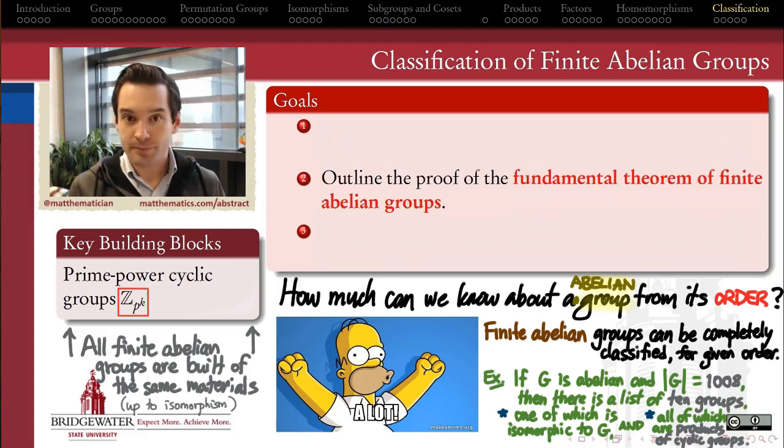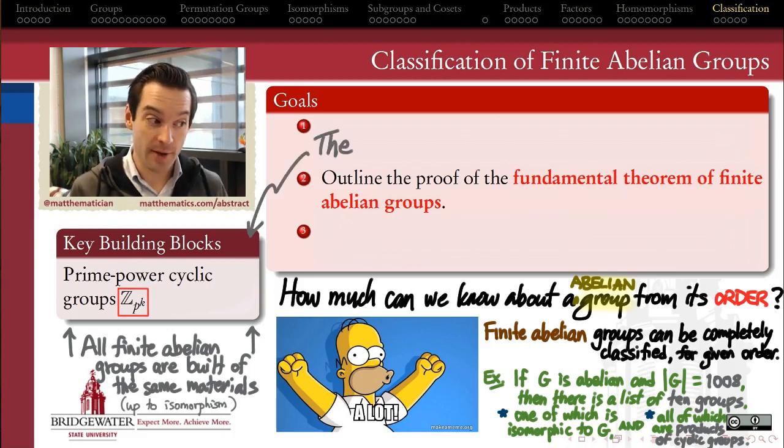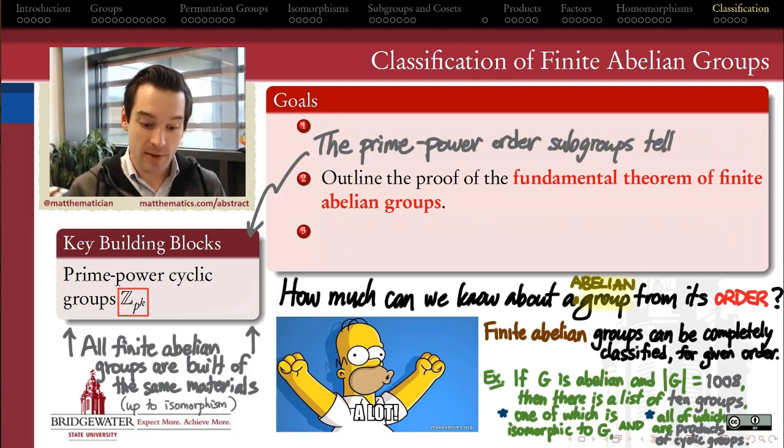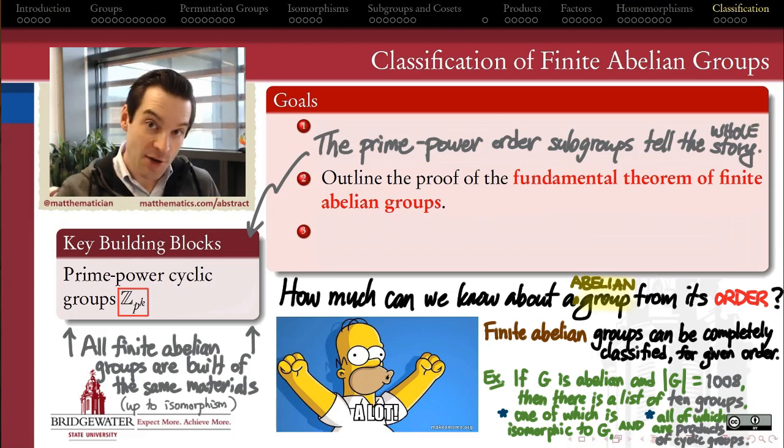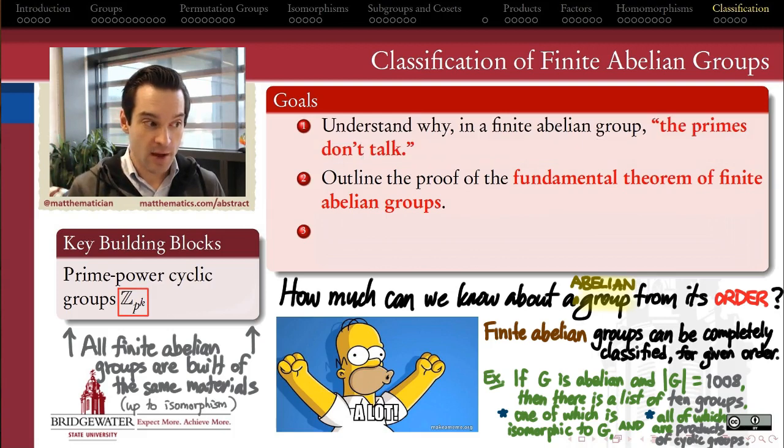So here's the agenda. I want to outline the proof of the fundamental theorem of finite abelian groups and see some illustrations. The key players on the stage are the prime power order cyclic groups. The theorem will tell us that those prime power order subgroups of G actually are going to be able to tell us the whole story about the structure of G. To get to that theorem, the most important step along the way is to understand why the primes are so important.